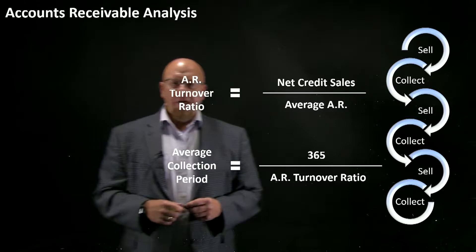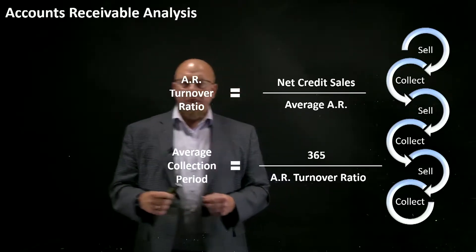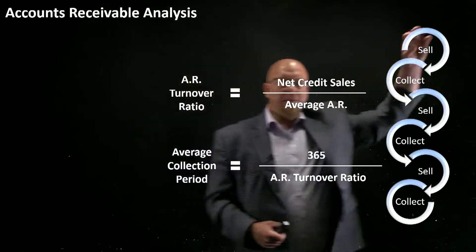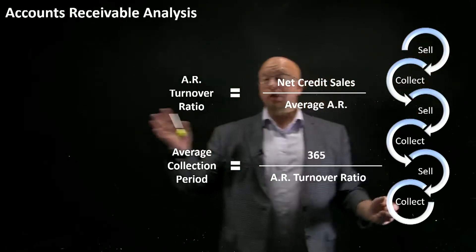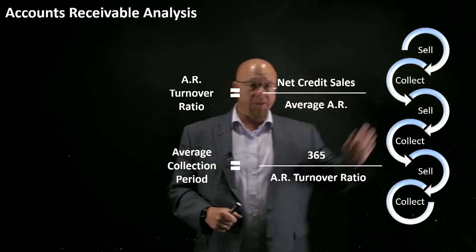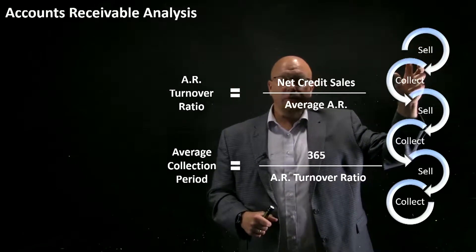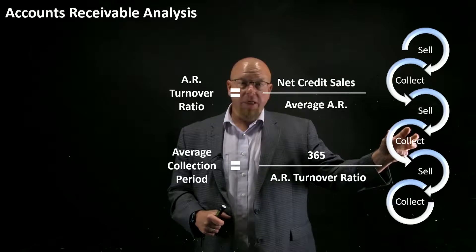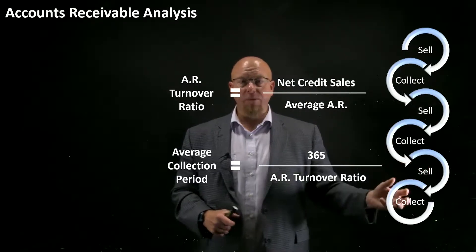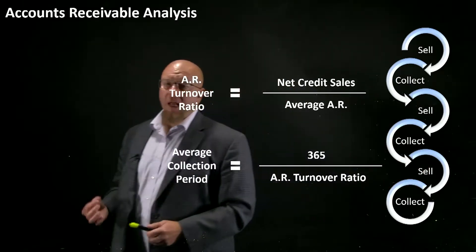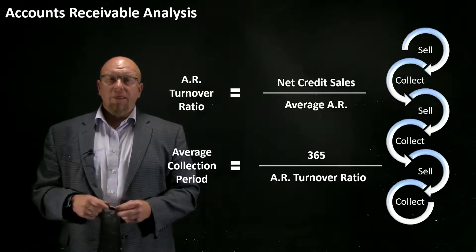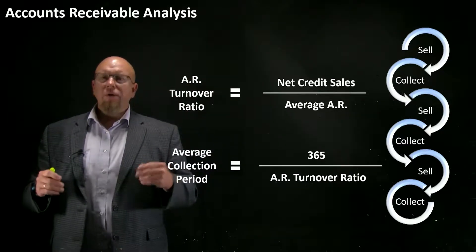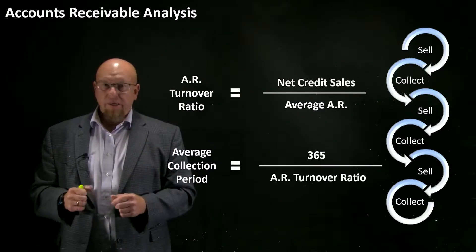Think about the accounts receivable turnover ratio as follows: we are selling products or services to our customers, making sales, and then collecting those receivables. Then we sell some more items, collect those, sell some more, and collect those again. In reality, we're never going to completely let our accounts receivable go down to zero most times, but you can think about it that way.